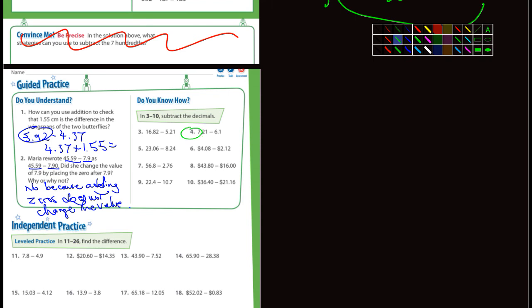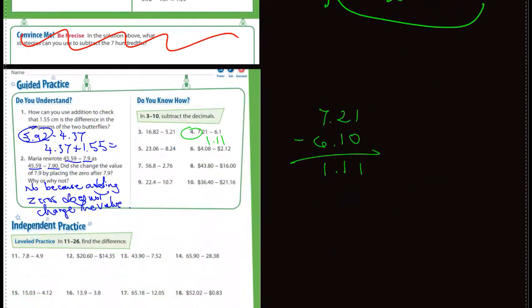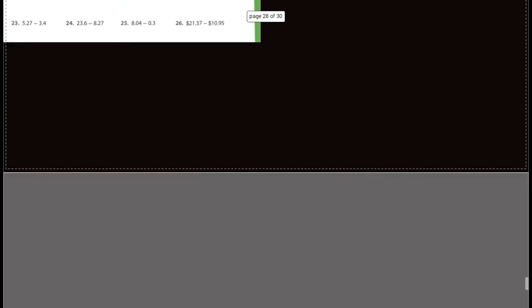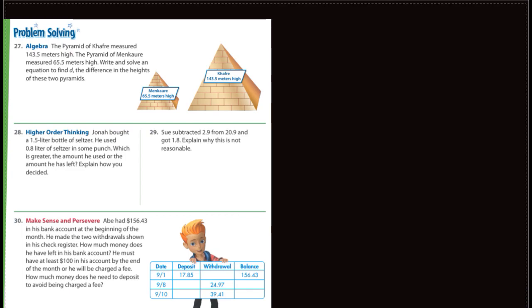Let's do one of these. How about number four here: 7.21 minus 6.1. You can add a zero if you want, it's not necessary. We're subtracting: zero from one is still one, one from two is one, the decimal comes straight down, and six from seven is one. The answer is going to be 1.11. You guys should be able to do these without too much of a problem, so I'll just let you figure out the rest on your own.